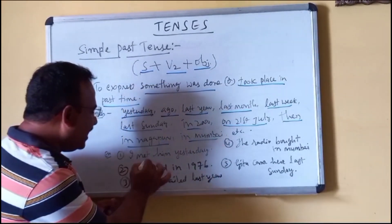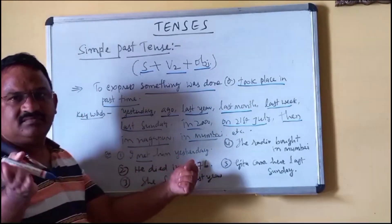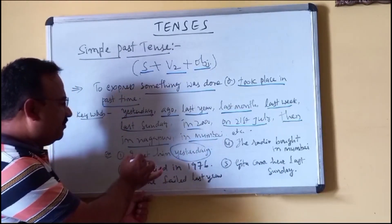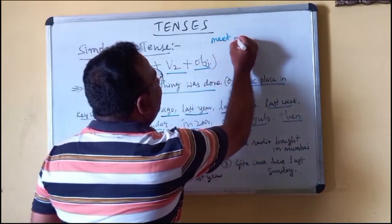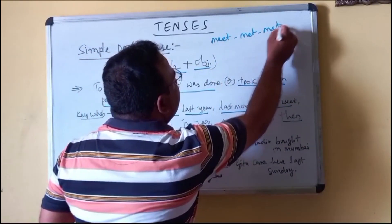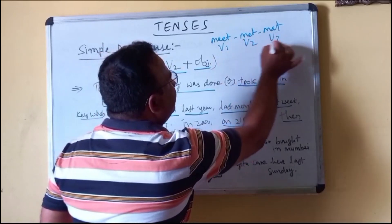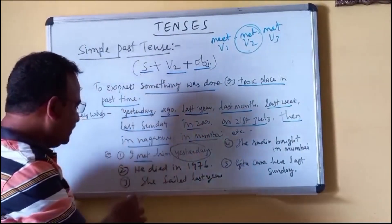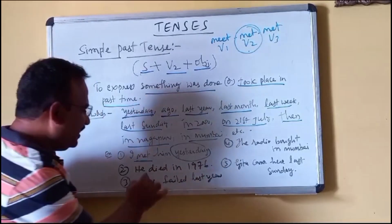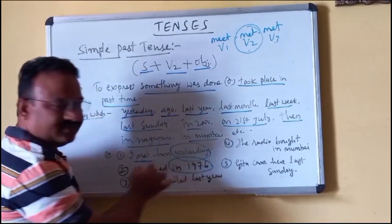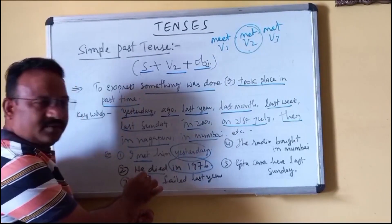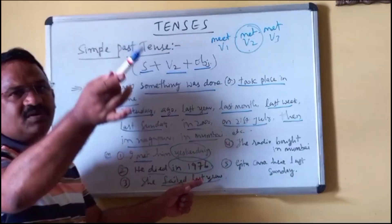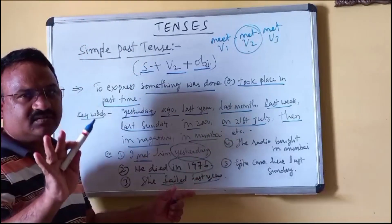For example: 'I met him yesterday.' The keyword is 'yesterday,' so we use past tense — meet, met — so V2 is 'met.' Another example: 'He died in 1976.' The keyword is 'in 1976,' so we use past tense — 'died.'